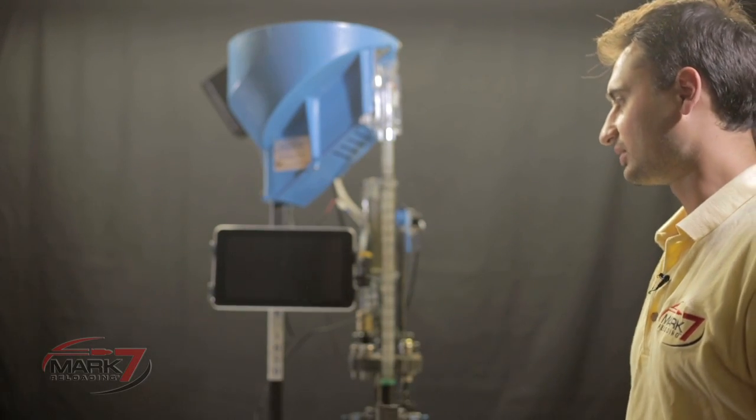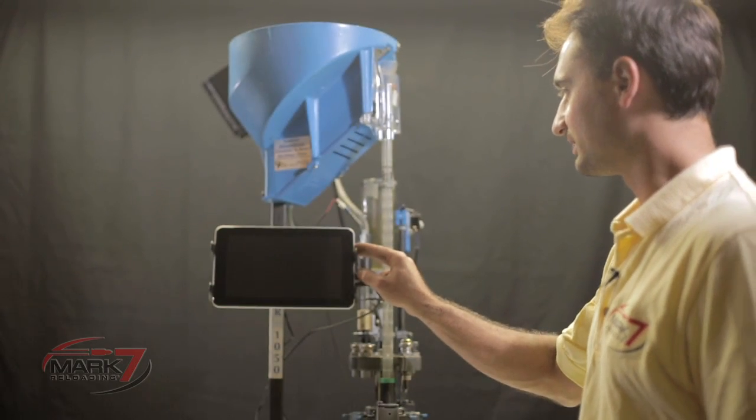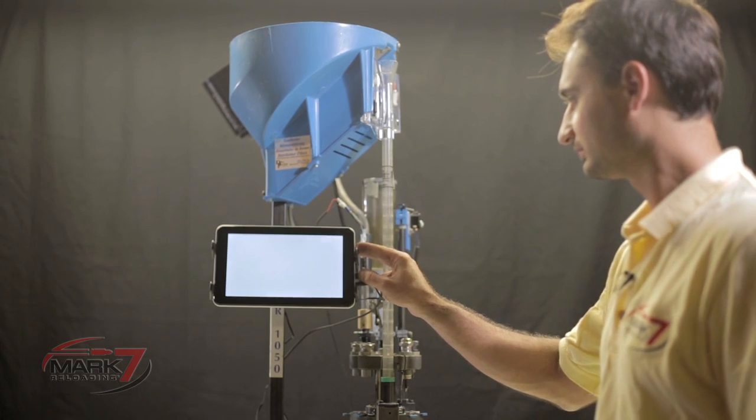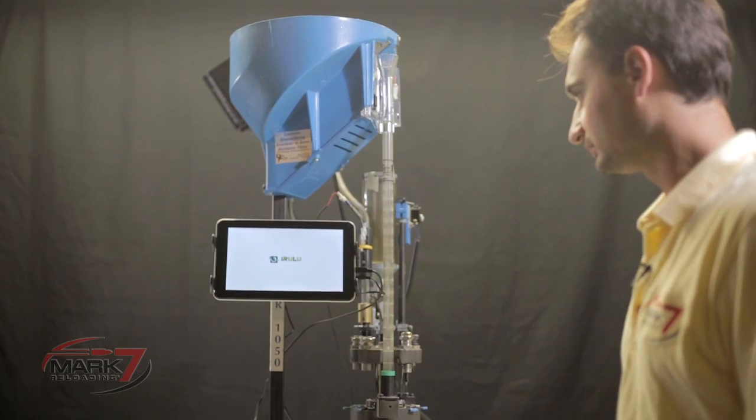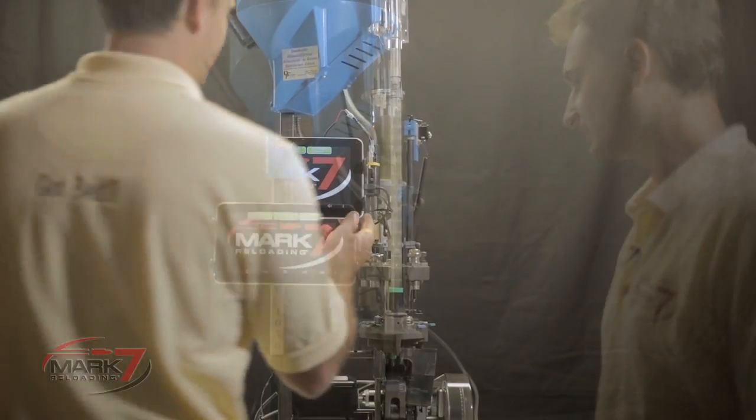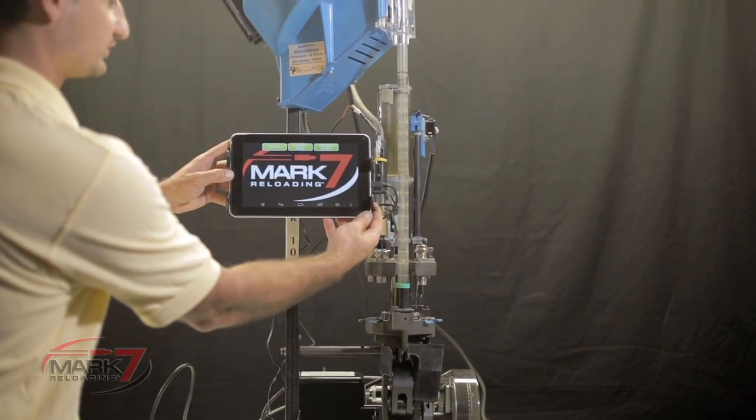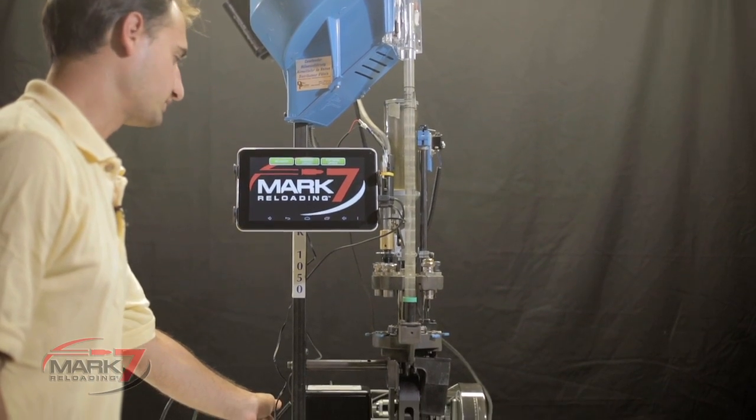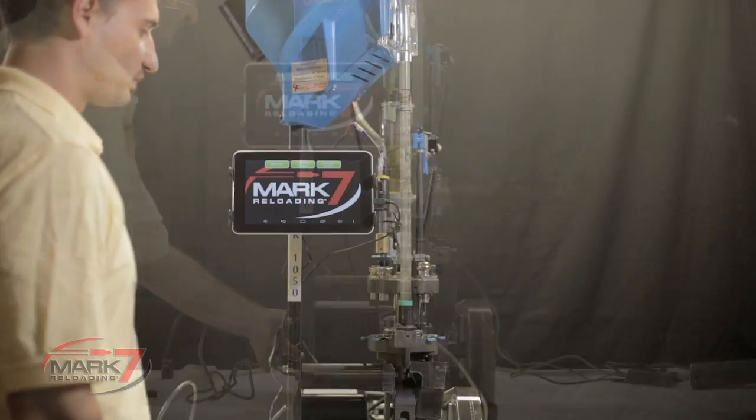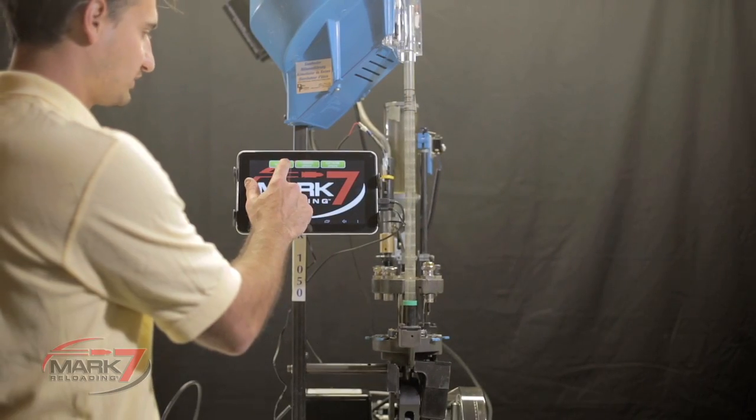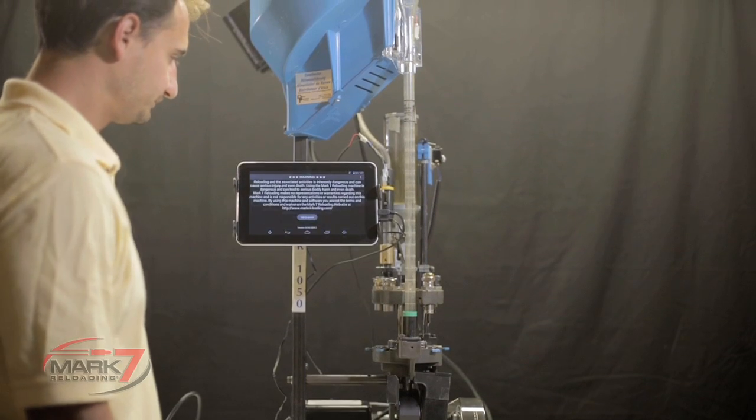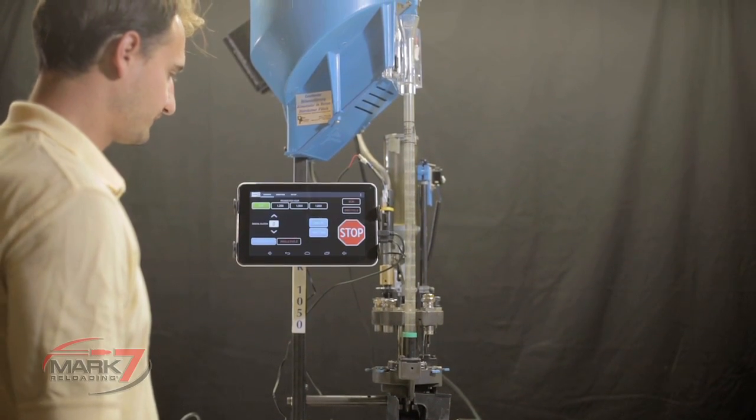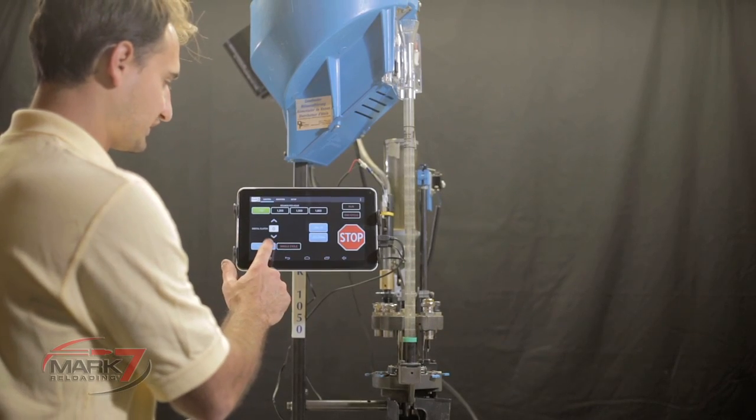To power on the Mark 7 Auto Drive, press and hold the power button on the tablet. The tablet will launch to our home screen. Once we're on the home screen, you can turn on the on-off switch on the console. When you're ready to start reloading, select reloader, accept the waiver, and select calibrate.